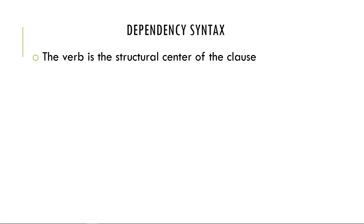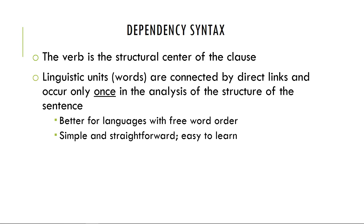In this system the verb is always the structural center of the clause — the first thing you look for is your verb. All the linguistic units are directly connected only once in the whole structure of the sentence. When you analyze sentences in what we call trees, you get just that: one verb or one word at the very top — a verb or a coordinator — and then you work your way down into more and more subordinated elements. It's very simple, easy to use, and especially good for free word order languages like Latin and Greek.